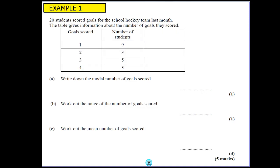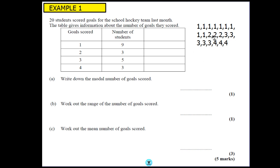First example: 20 students scored goals for the school hockey team last month. The table gives information about the number of goals they scored. If you think of this table as a list of numbers — generally you don't want to be writing out the list, but it helps to visualise what this table represents. This is what causes so much confusion for students: they lose sight of what this table is actually representing. So what we're saying is that 9 students scored 1 goal, 3 students scored 2 goals, 5 students scored 3 goals and 3 students scored 4 goals. The questions below would probably be answered no problem at all if students saw them in this list, but when they see them in a table they start to get confused.